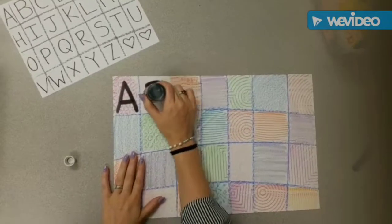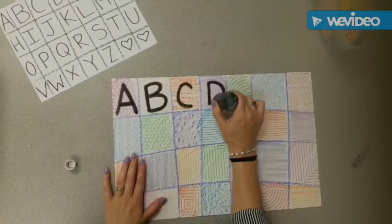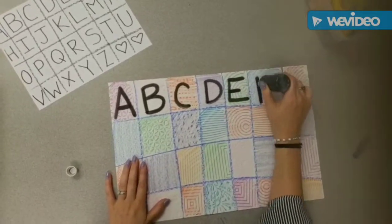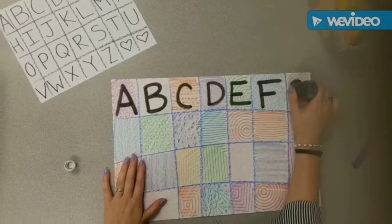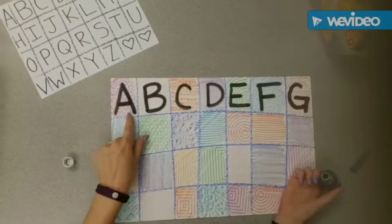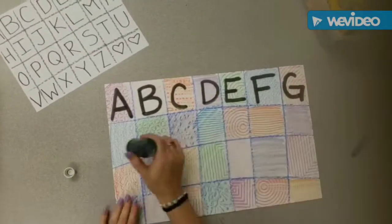As you're going along, you can say the ABCs. This will help you make sure that the next letter is the correct one. Sometimes I forget where I am and I have to start the ABCs all over again, and that's okay. A, B, C, D, E, F, G, H.